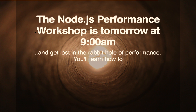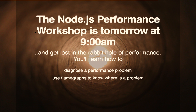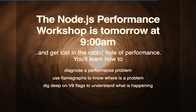Tomorrow at 9 a.m. I'm doing a performance workshop with my colleague Josh, where you will get deep into the rabbit hole of performance. In that workshop we'll go through how to diagnose performance problems using NodeClinic, but also using other things like the Node inspector. We will use flame graphs to find where the problem is, and we will dig deep into V8 flags to understand what is happening — including inlining, the optimization cycle, and TurboFan. We'll use a slow REST API as our example application.